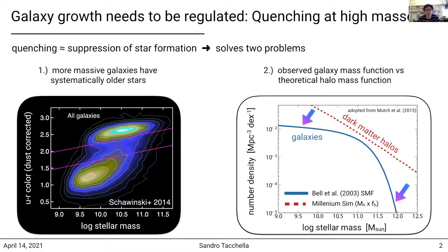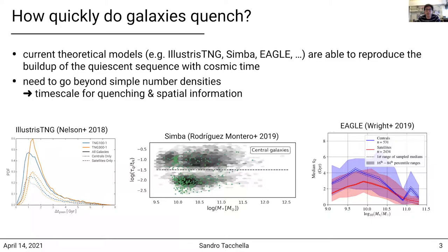The most recent generation of theoretical models, such as IllustriousTNG, Simba, and Eagle, are all able to reproduce the buildup of the quiescent sequence with cosmic time. This is partially by construction, since these simulations have been optimized to reproduce key observations such as the galaxy stellar mass function and the cosmic star formation rate density. Clearly, we want to learn more about quenching and the phases of quenching, and we need to go beyond simple number densities. I will make the case that the timescale for quenching and how quenching proceeds within galaxies on spatially resolved scales will help us learn more.